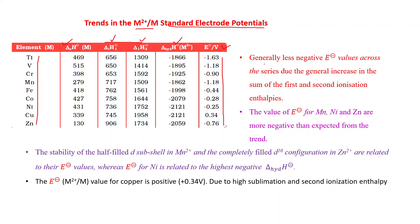If we see the general trend, there are generally less negative E° values across the series. This is due to the general increase in the sum of the first and second ionization enthalpies. You can see from these values that the sum of these two generally increases across the series, which is why the E° value becomes less negative.